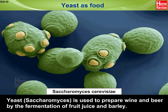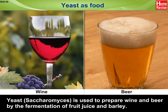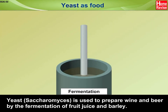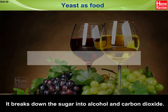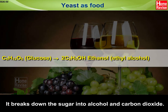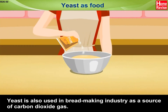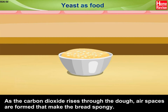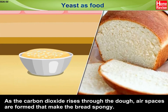Yeast as food: Yeast, Saccharomyces, is used to prepare wine and beer by the fermentation of fruit juice and barley. It breaks down the sugar into alcohol and carbon dioxide. Yeast is also used in the bread-making industry as a source of carbon dioxide gas. As the carbon dioxide rises through the dough, air spaces are formed that make the bread spongy.